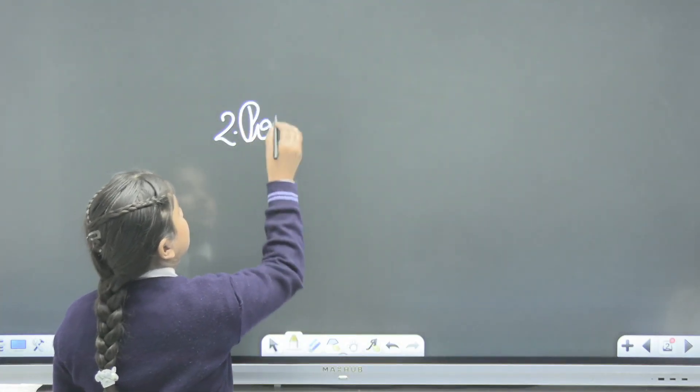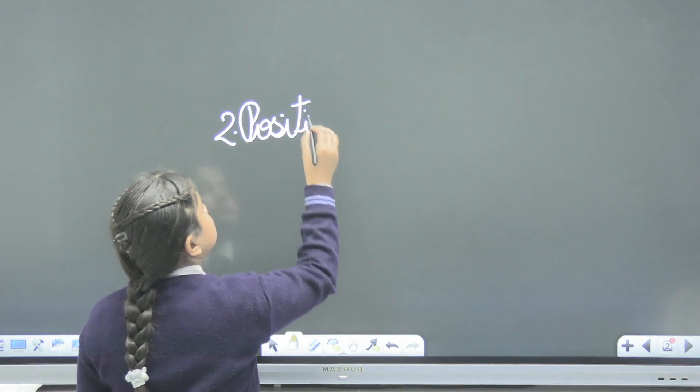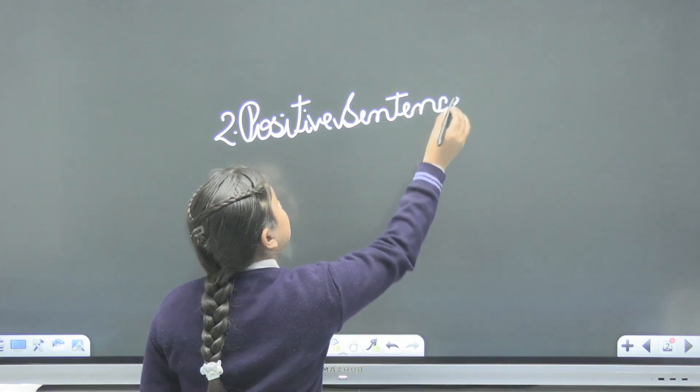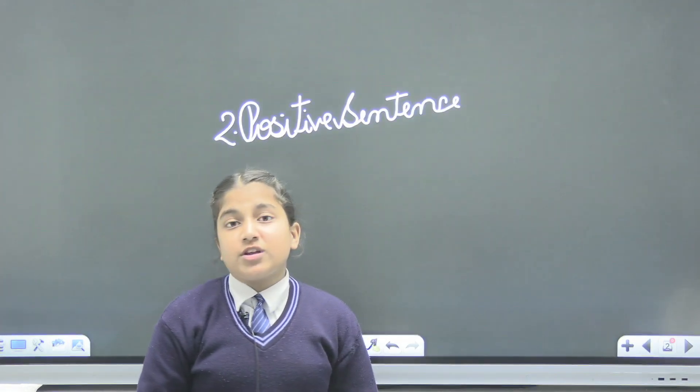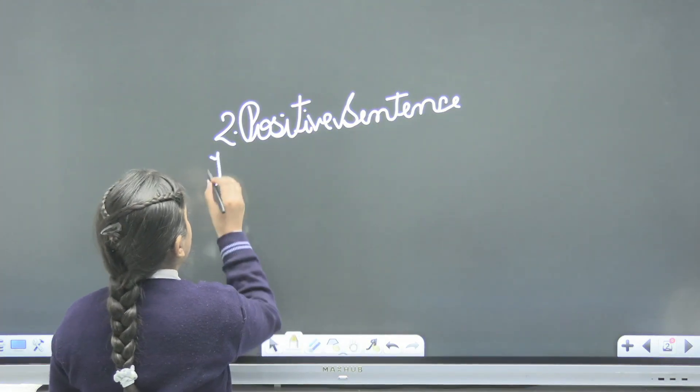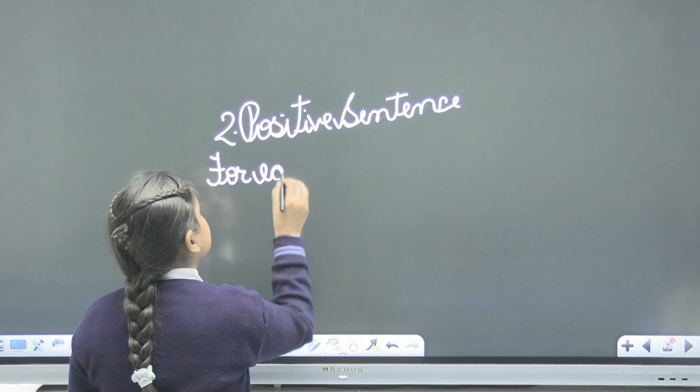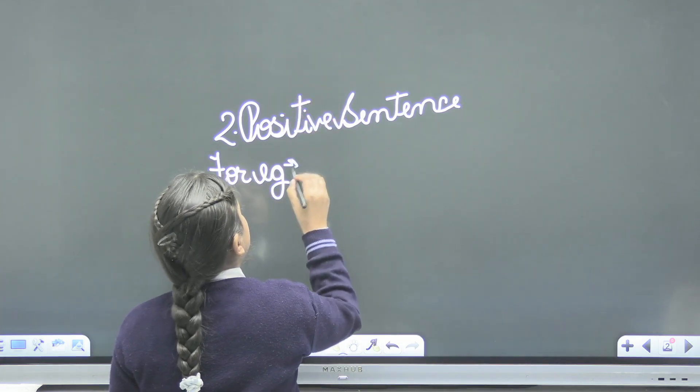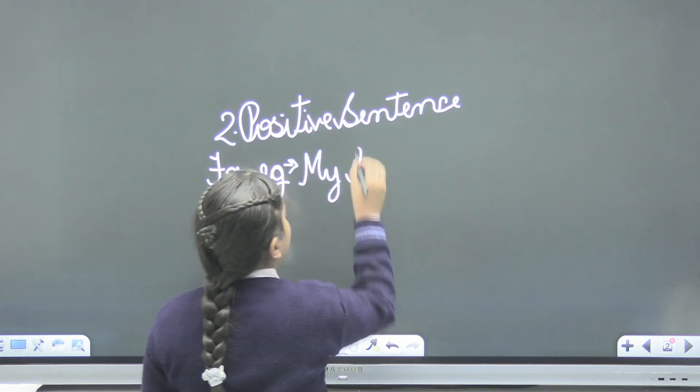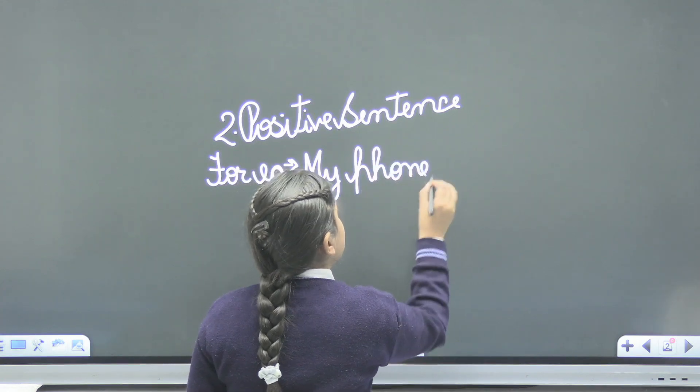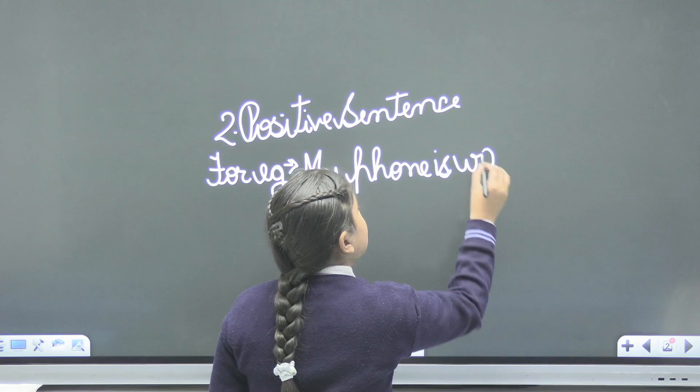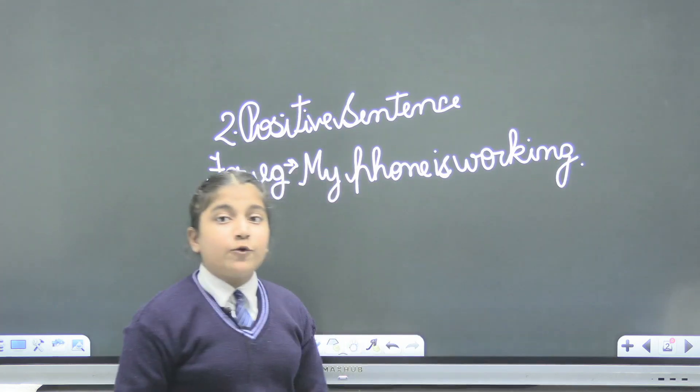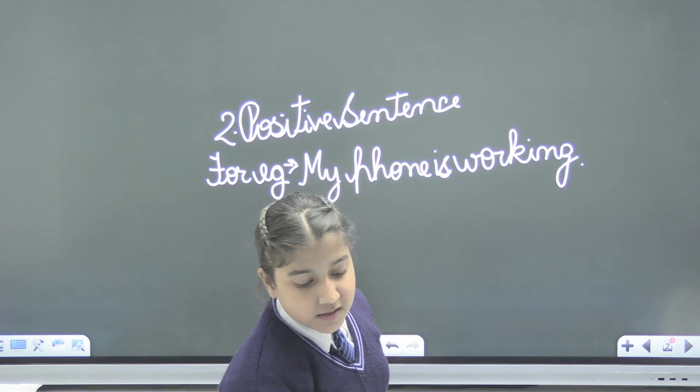Now second, positive sentence. The sentence in which the information is in positive form. For example, my phone is working. Now second one is interrogative sentence.